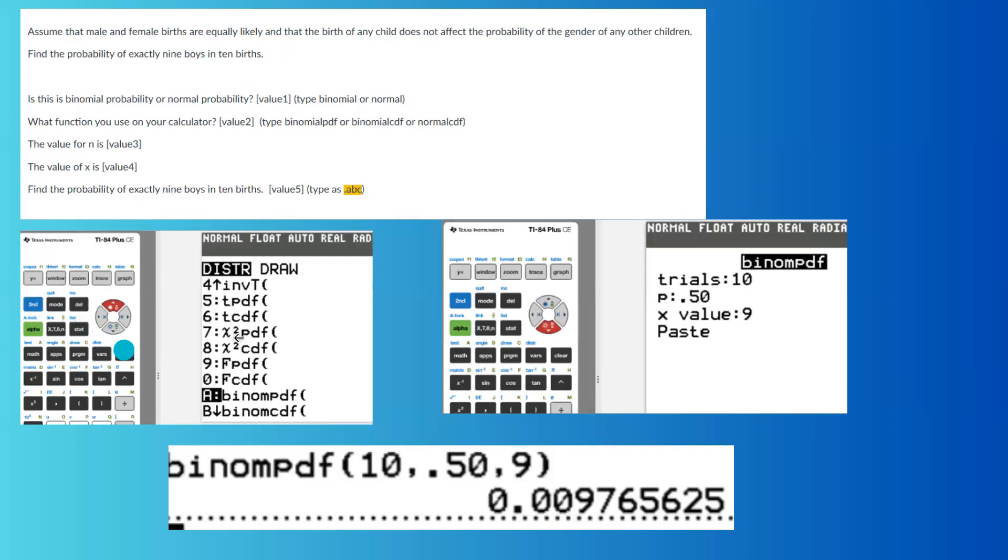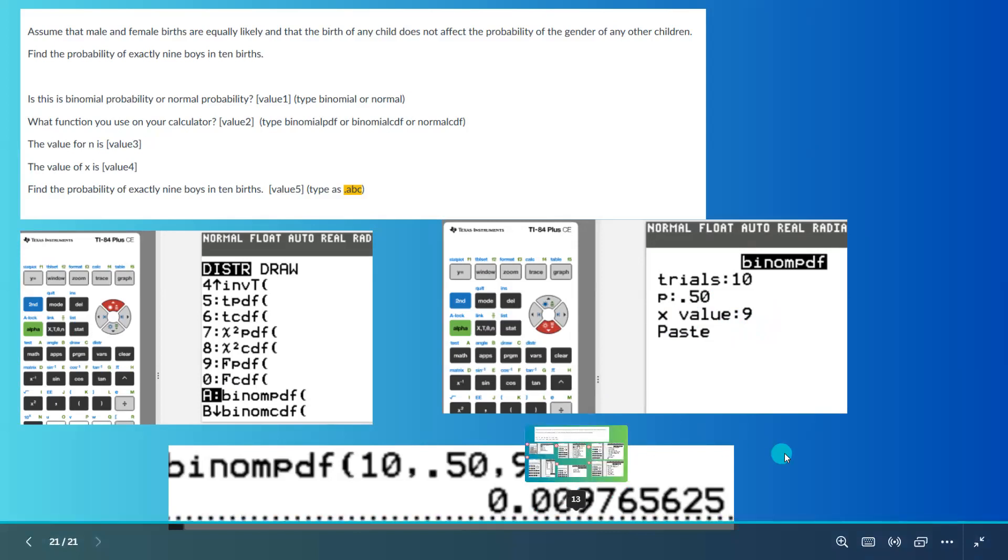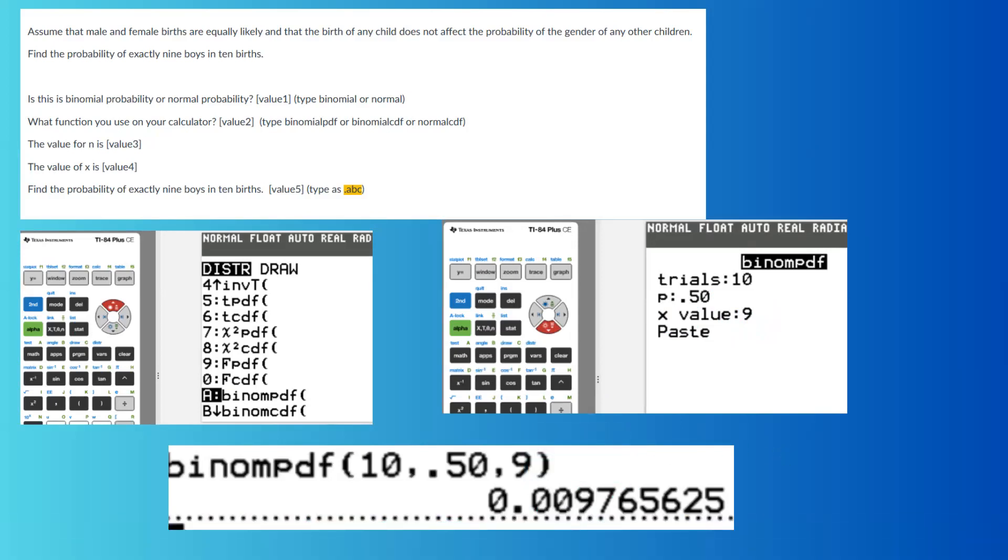You're going to use your calculator. Go to second, vars, and select binomial pdf. Why? Because it says exactly. Then the number of trials is 10, probability of success is 50 percent, so 0.50, and x is going to be 9. When you do the calculation, this is the probability that you get: 0.0097, or it's about one percent.